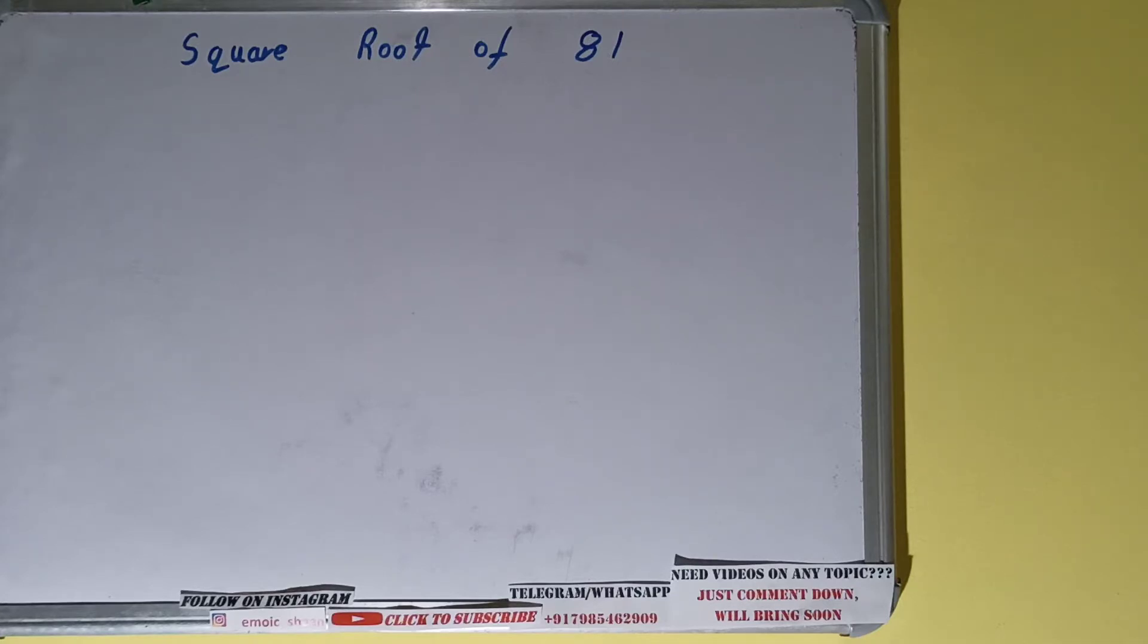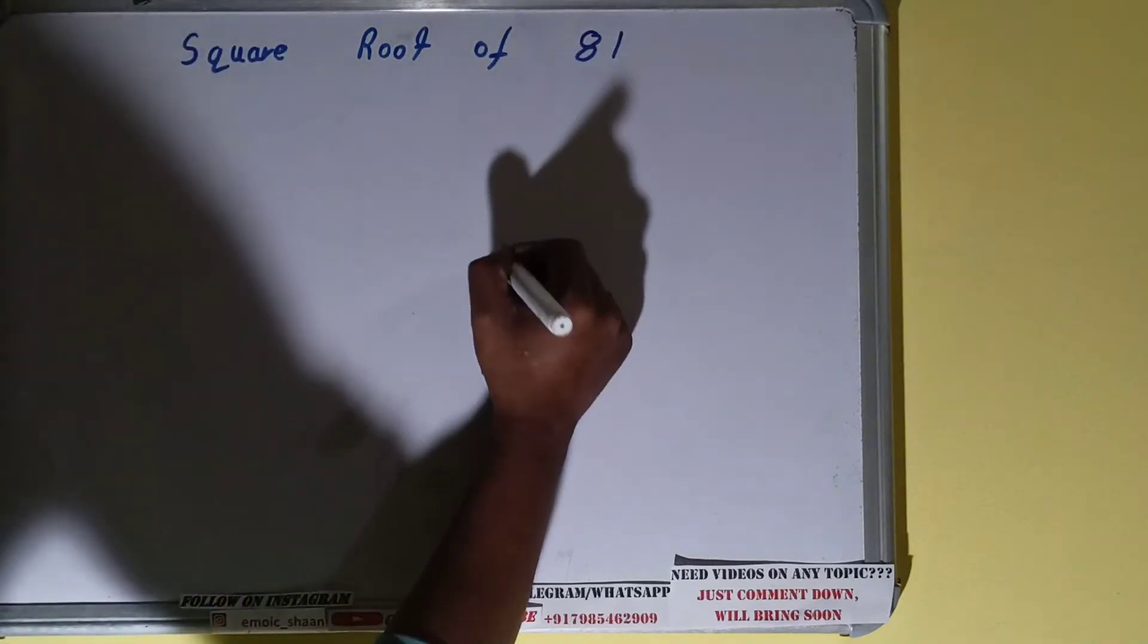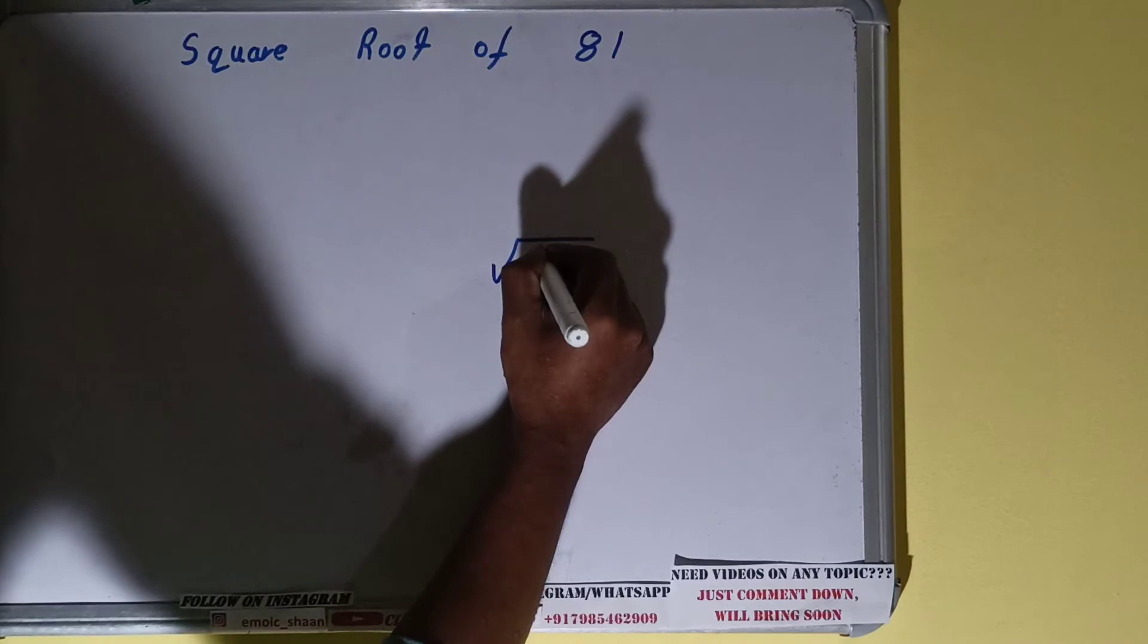Now before solving this, remember one thing: prime factorization method can be used for perfect square numbers, and for other numbers also you can use it, but only for simplification. So now let's begin.